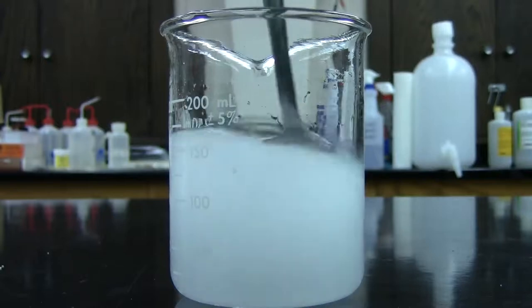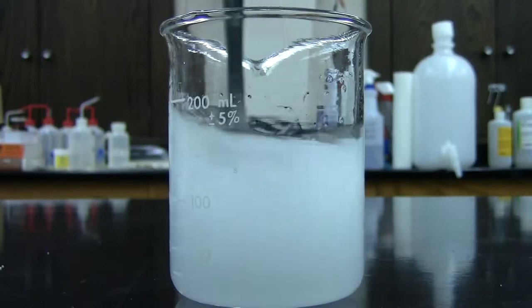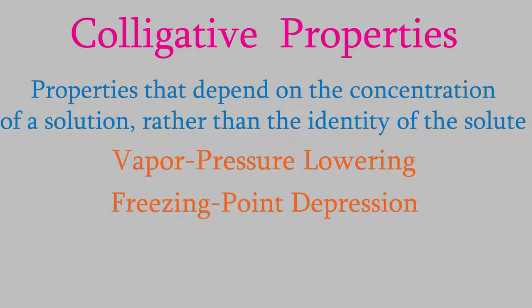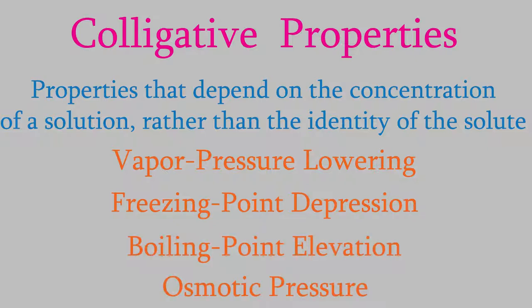The properties of a solution that depend on the amount of solute are called colligative properties. There are four of them: vapor pressure lowering, freezing point depression, boiling point elevation, and osmotic pressure. We'll talk about each of them in this video and the next two.